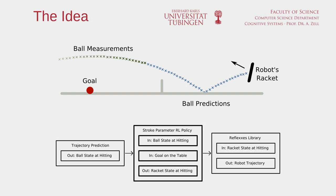Our idea is to first predict the ball's position, velocity, and spin at hitting time. Our algorithm should then output the orientation and velocity of the racket at hitting time. Finally, we use the reflexes library to plan a fitting robot trajectory.